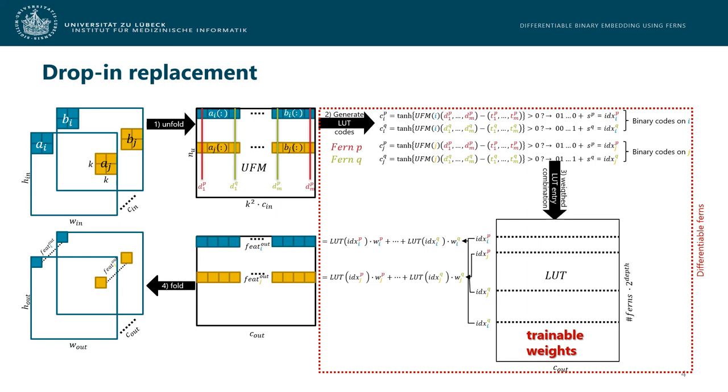While the feature indices themselves provide no gradient to train the networks, a scalar instance weight W that measures the proximity of continuous valued feature vectors to binary strings is very suitable to enable end-to-end training. By building the row-wise entries of the resulting feature matrix from linear combinations of lookup table entries weighted by these factors W, the gradient flow during backpropagation is now possible.